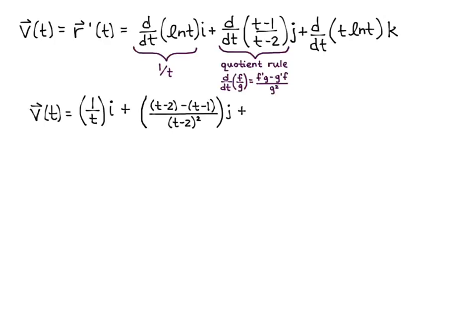Now my k component, I need the derivative of t times natural log of t, which is a product, so I'll need the product rule. So recall that the derivative of u times v is equal to u prime v plus u v prime. So since you're adding, the order that you do this doesn't matter as much as in the quotient rule, because in the quotient rule you're subtracting. Okay, so my u in this case will be the t, and my v will be the natural log of t. So I'll have 1 natural log of t plus t times 1 over t. There's my k component.